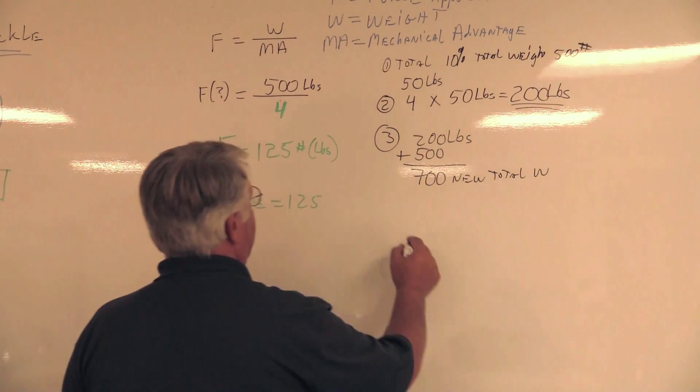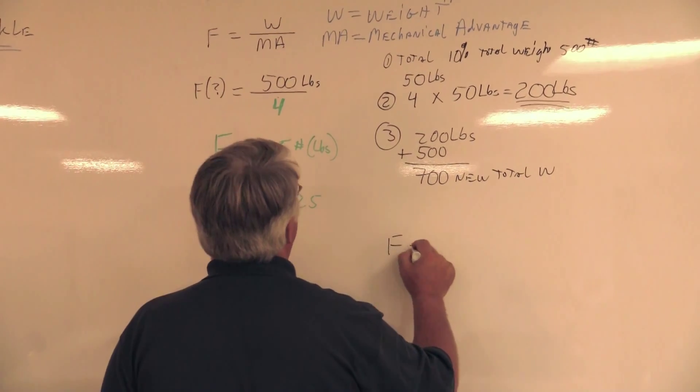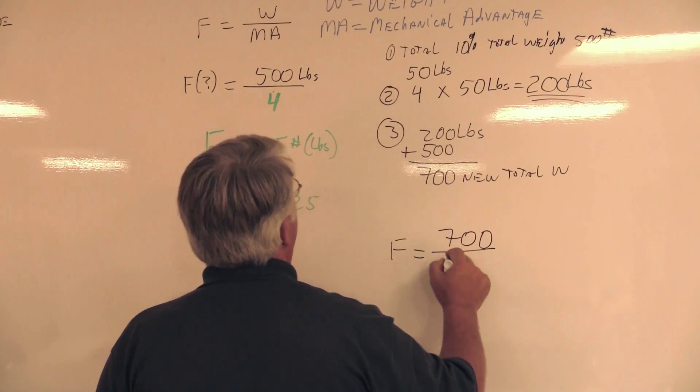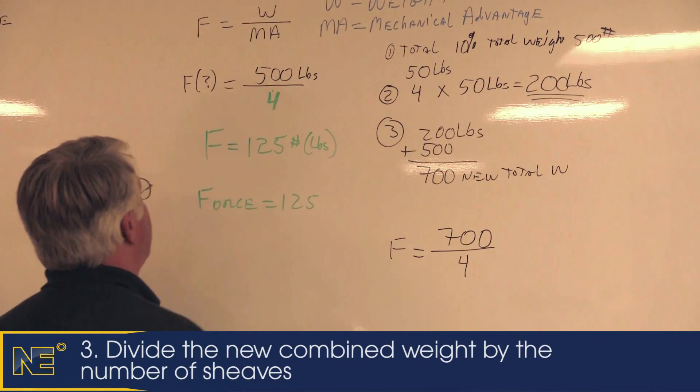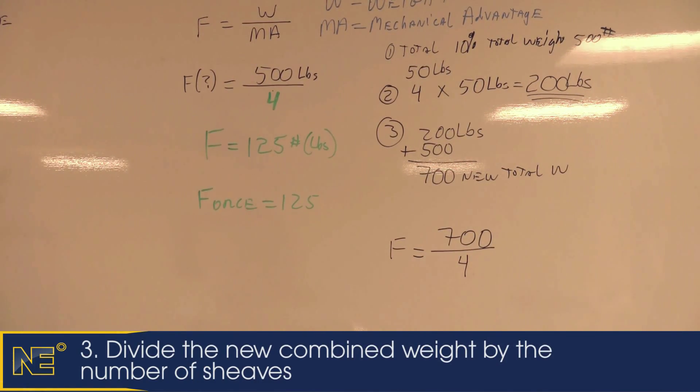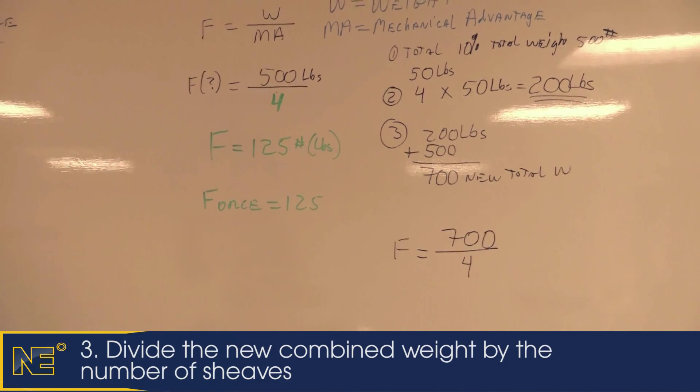I'm going to add those two together, and I'm going to get a new total weight of 700 pounds. Now I can take this 700 pounds, and I'm going to put it into the formula that I had earlier. I still have the same mechanical advantage. That hasn't changed.